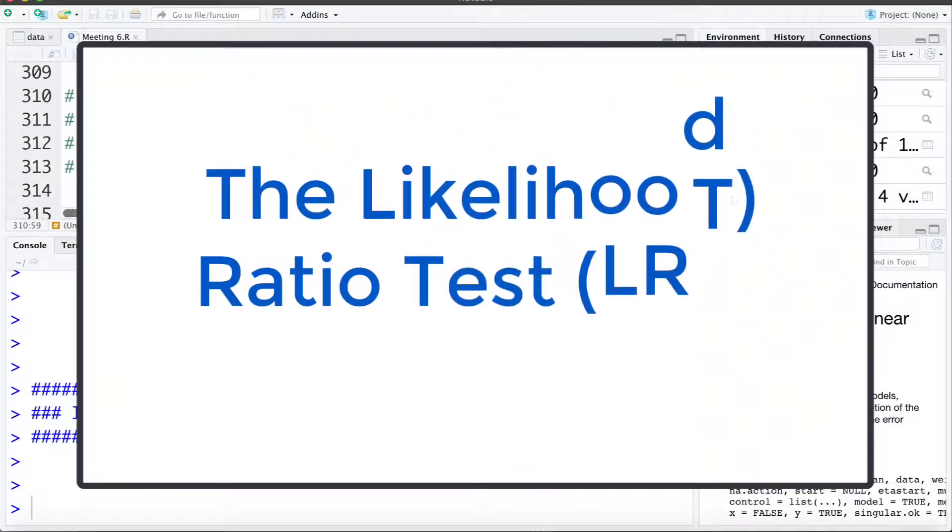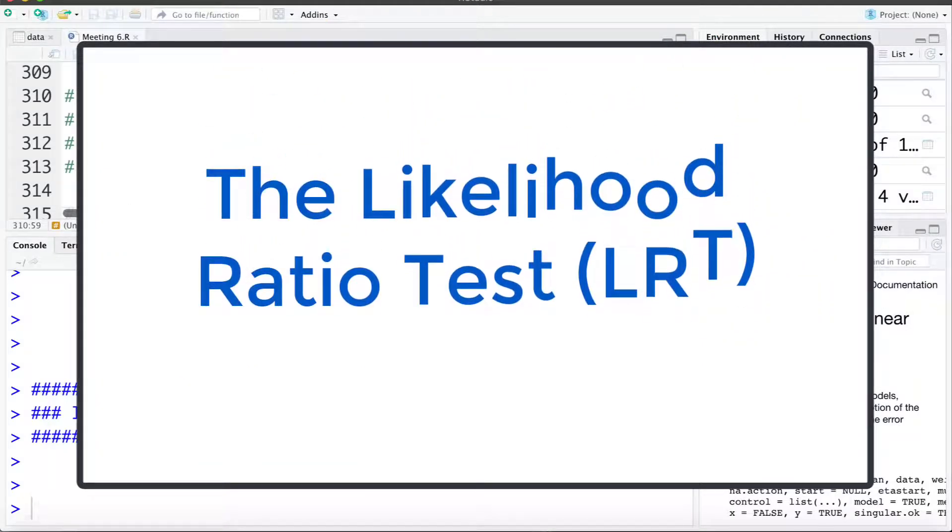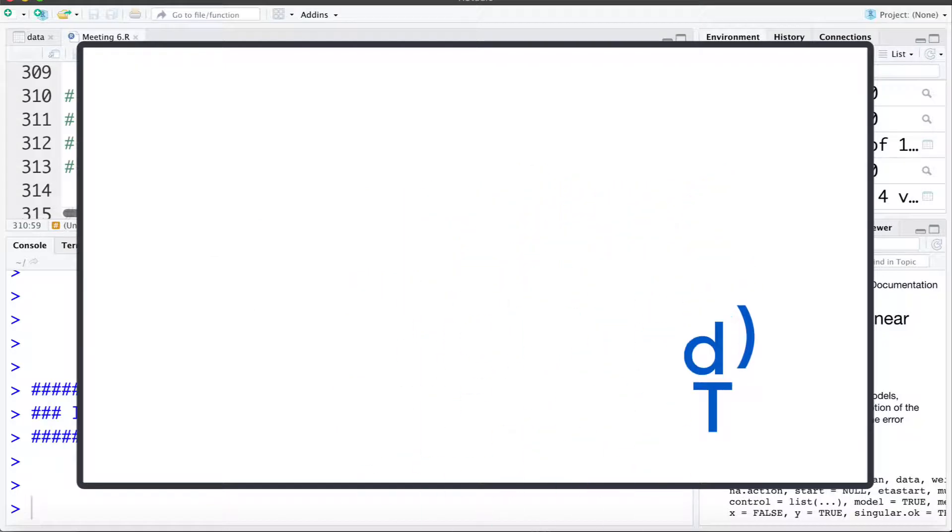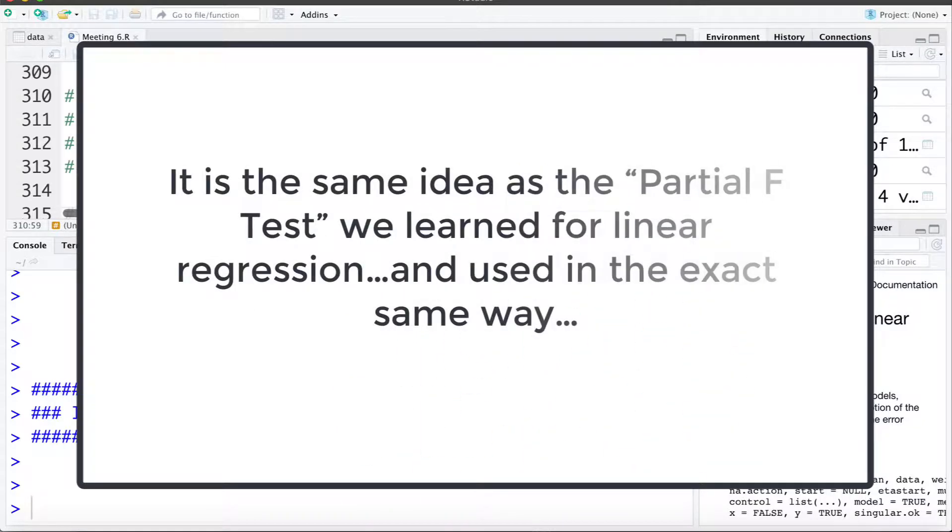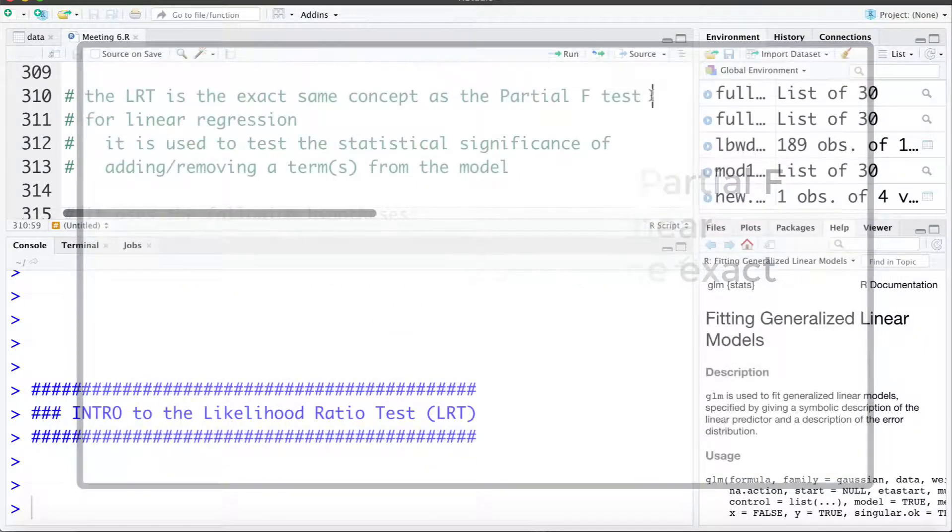In this video we're going to introduce the likelihood ratio test, or what we'll abbreviate LRT. The likelihood ratio test is the exact same concept as the partial F test that we use for linear regression. It's used in the exact same way and we can use it for things like testing the statistical significance of adding or removing certain terms from a model.